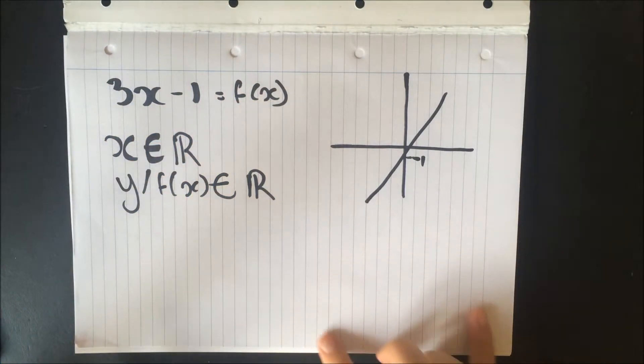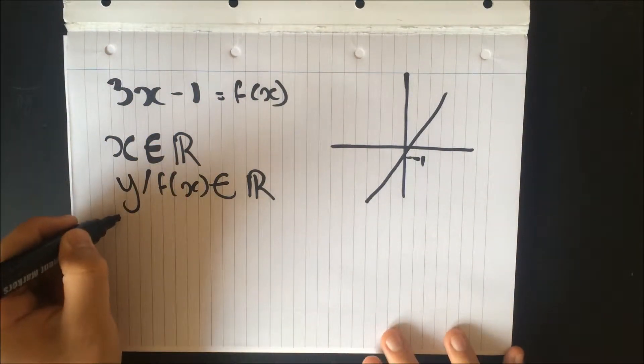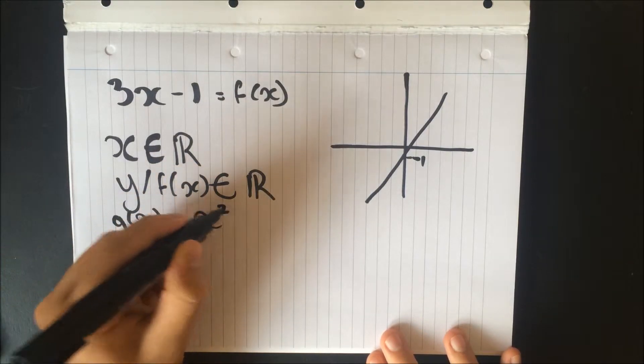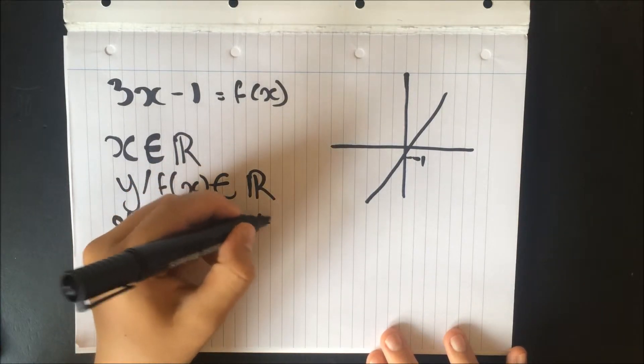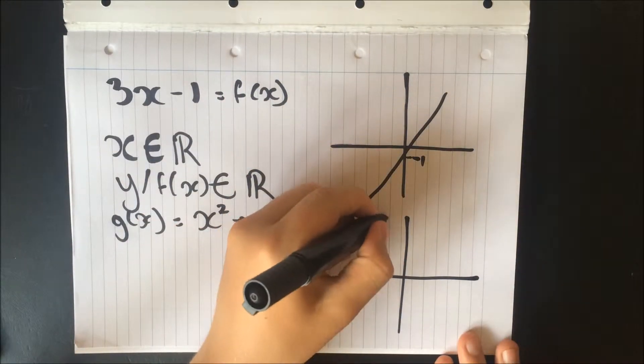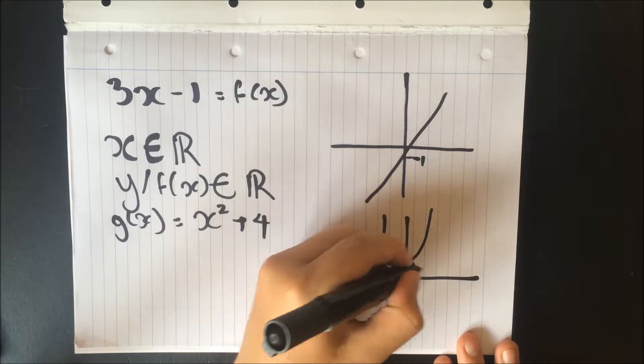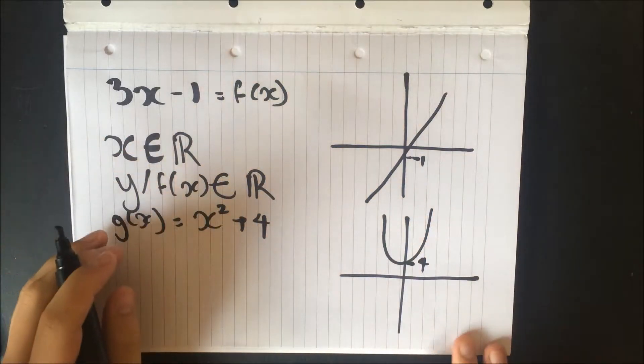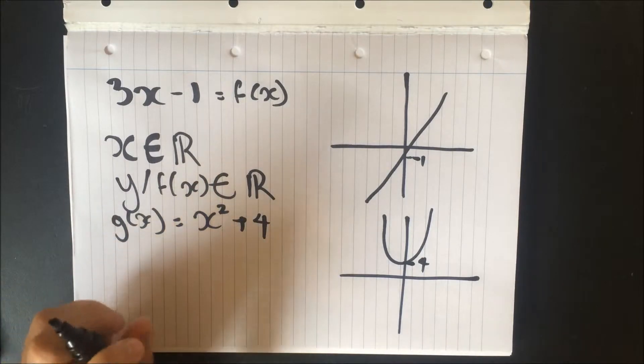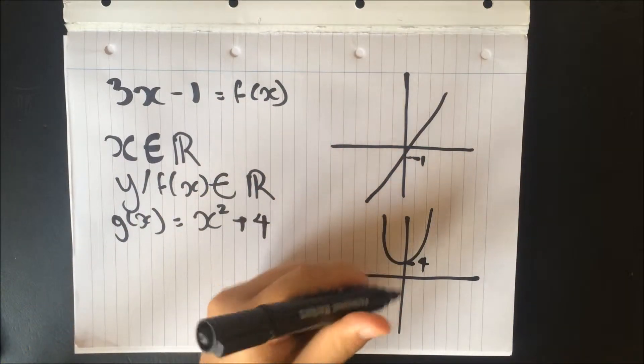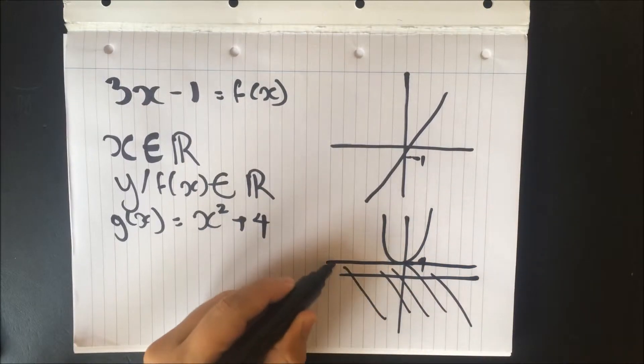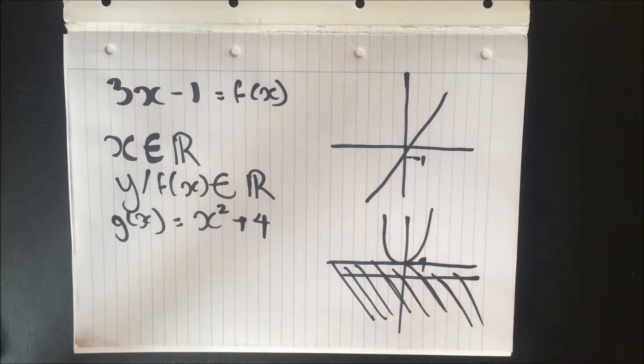How about if we had an x squared. So g(x) is equal to x squared plus 4. So our x squared graph looks something like that, where that point is 4. It's just rough drawing. Okay. So we can see that below 4, there's absolutely nothing.